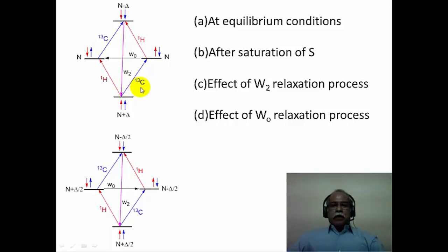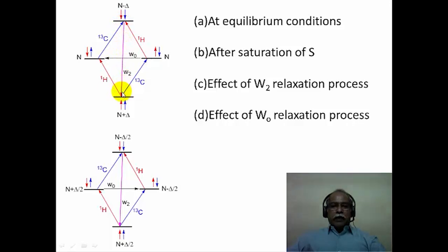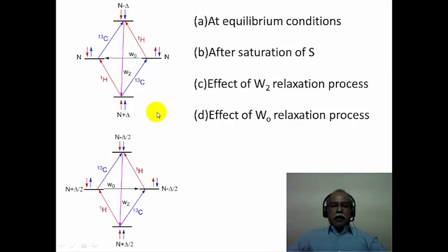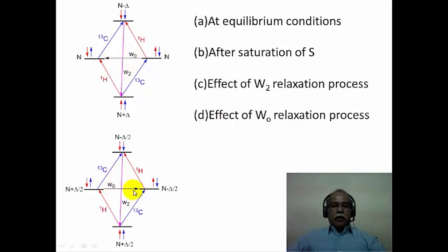We have to consider four different scenarios: the equilibrium condition, after saturation of the proton, and two types of relaxation processes. There is a double quantum relaxation in which both spins opposed to the external magnetic field get inverted—Δm = 2—this is the W₂ transition. There is also a W₀ transition where the change in m is zero, in which spins are transferred between states of equal total spin.